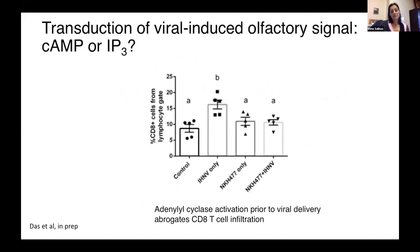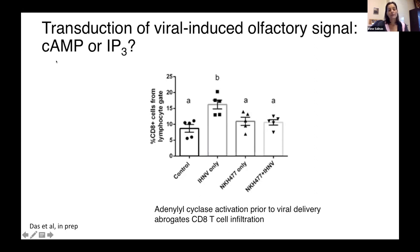The next experiments aimed to dissect which neuronal signals are involved. In fish, olfactory signal transduction can occur through cyclic AMP or inositol triphosphate. We first checked cyclic AMP by giving a drug called NKH477 intranasally, which activates adenyl cyclase and depletes cyclic AMP prior to virus exposure. If we give the virus alone, we have our usual infiltration of CD8 cells. But if we deplete cyclic AMP with this drug prior to virus exposure, we completely abrogate the response. So this response is cyclic AMP dependent.